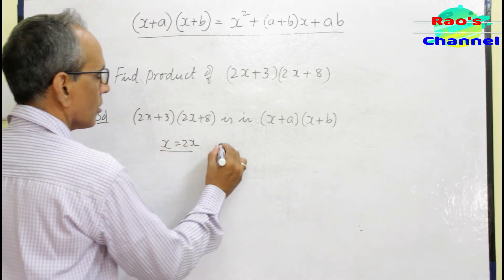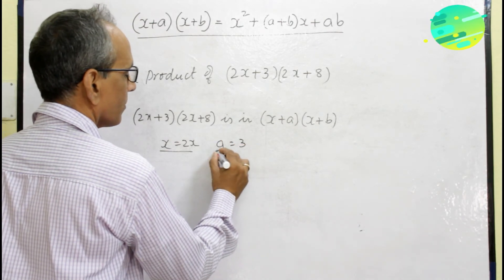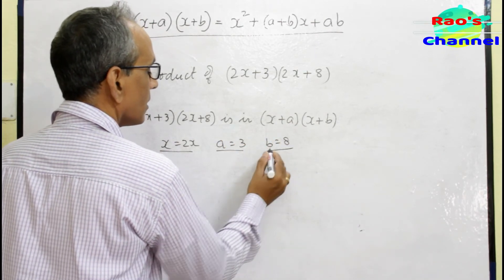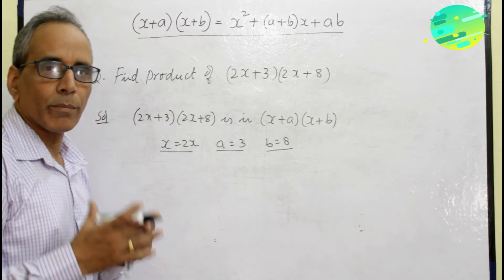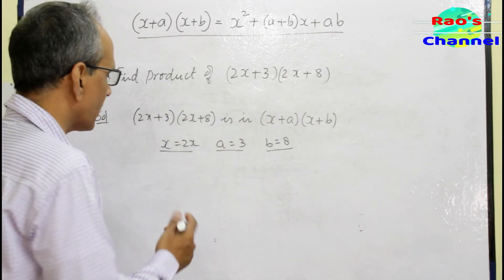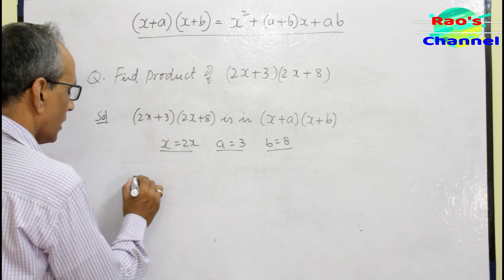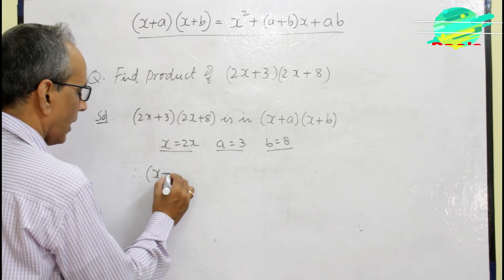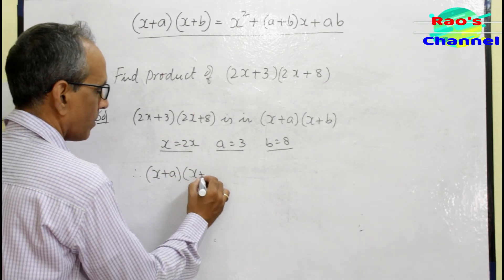Here in my mind, x is 2x, a = 3, and b = 8. These are the values for x, a, b in my mind.